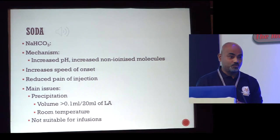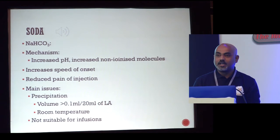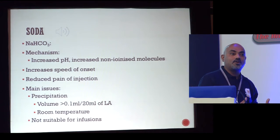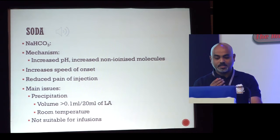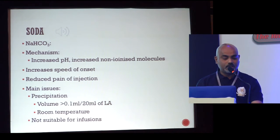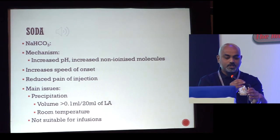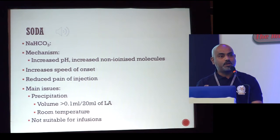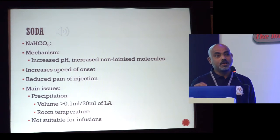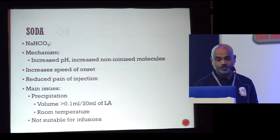Sodium bicarbonate is very commonly used as a local anaesthetic adjuvant. It increases the pH, increases the un-ionized component, and it is very useful in that it quickens the onset and reduces the pain of local anaesthetic injection. But the main issue is if you use a volume more than 0.1 ml for 20 ml of local anaesthetic, it can cause precipitation. You also have to use it at room temperature and it is not suitable for infusions.